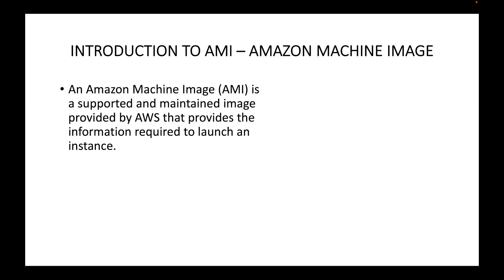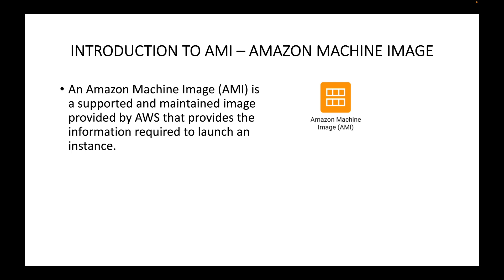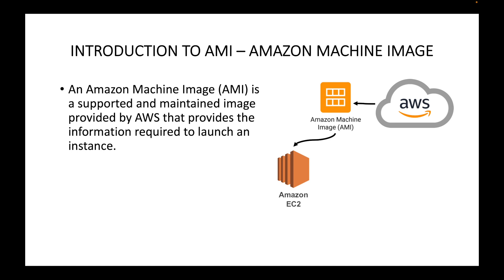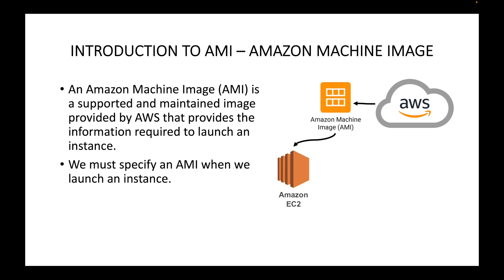Your AMI stands for Amazon Machine Image and this is nothing but your operating system. This AMI is supported and maintained by AWS, and it basically contains all the required information for launching your EC2 instance — information about your operating system, any pre-installed applications. All that information will be available within the AMI and we can use this to launch our EC2 instances.